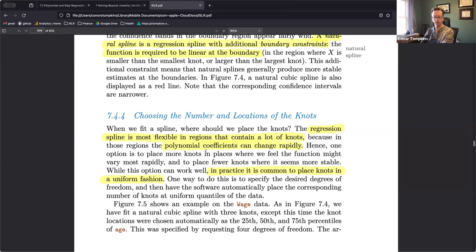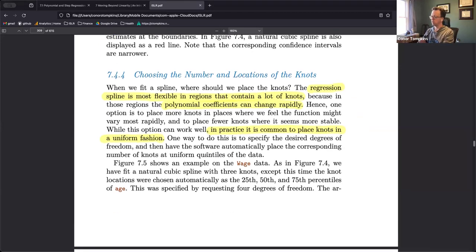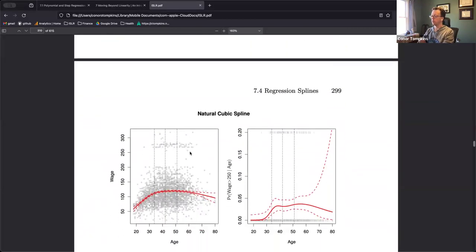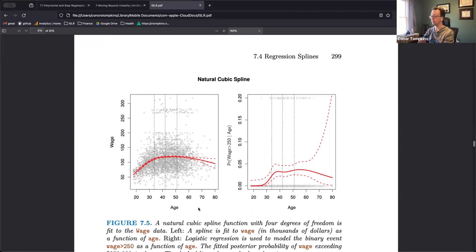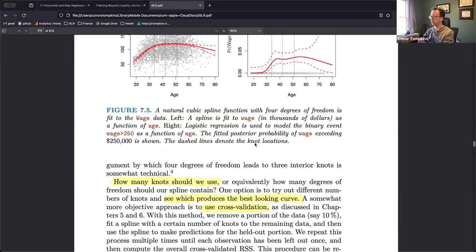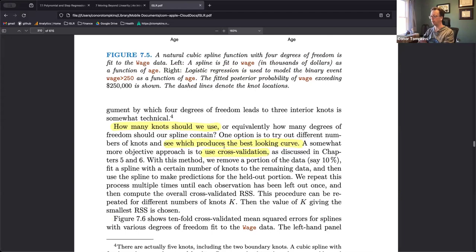So where to put the knots? There's multiple ways to try it, but in practice you put them in a uniform way, at the 25th and 50th and 75th percentiles of the variable for example. But if you have some specific reason to think that other locations might be better, then you can try those. Here you can see the dash lines represent the three knots they have, and the natural cubic spline has one, two, three, four segments that it's modeling there.